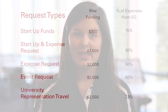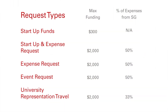There are five different types of requests for this appropriation cycle: Startup Funding, Startup Funding and Expense Request, Expense Request, Event Request, and University Representation Travel Request. You may only apply for one request type. If you would like to submit an expense and travel request, submit your application as an expense request and explain that you would also like funding for the travel expenses listed in your budget.